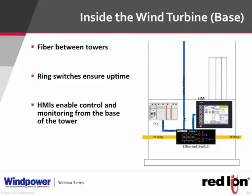A typical wind farm has turbines scattered across a landscape with long distances between them. Copper has a limitation of 328 feet, so fiber optic cables are used between turbines, while copper may be used inside the turbine itself. The diagram shows an Ethernet ring connecting all towers — each switch participates in the ring, and the ring provides redundant connectivity between towers.